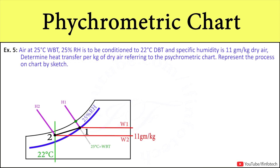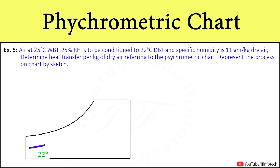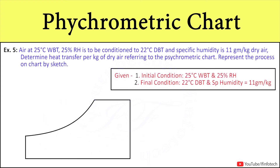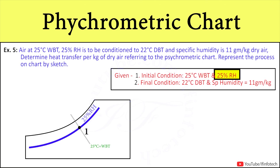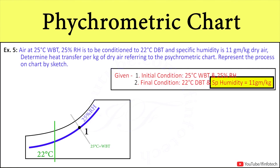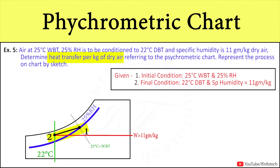Here we have to plot the process on the psychrometric chart. First we will write down the data which has been provided. The given data for properties of air at initial condition is 25 degree Celsius wet bulb temperature and 25% relative humidity. For properties of air at final condition: 22 degree Celsius dry bulb temperature and specific humidity 11 grams per kg. We have the process 1 to 2 and we want to determine heat transfer during the process 1 to 2.